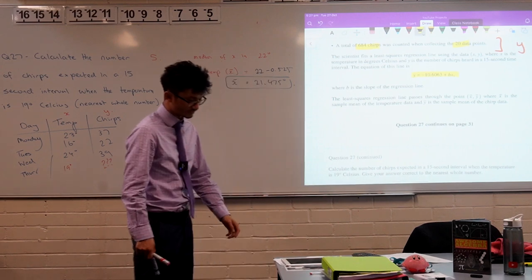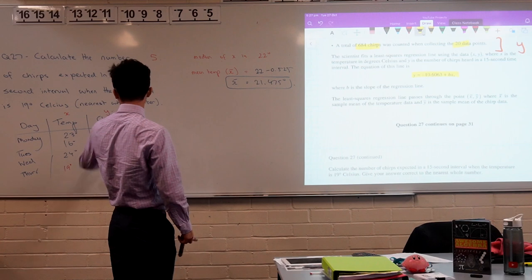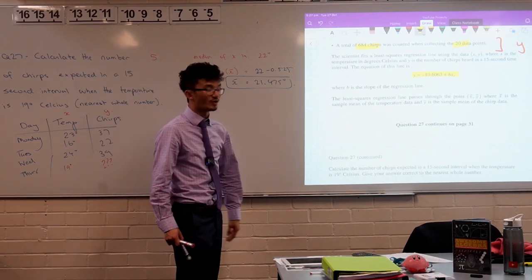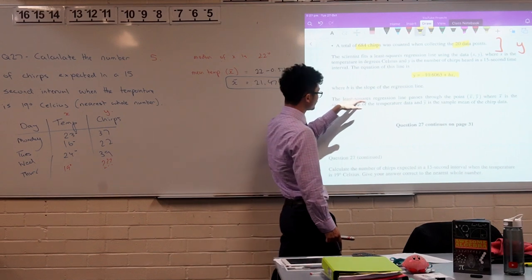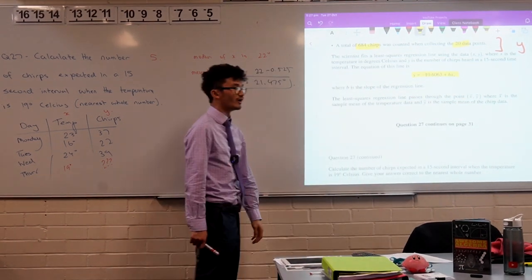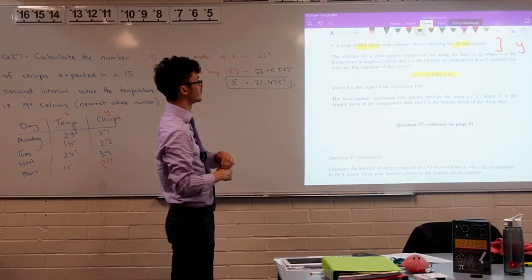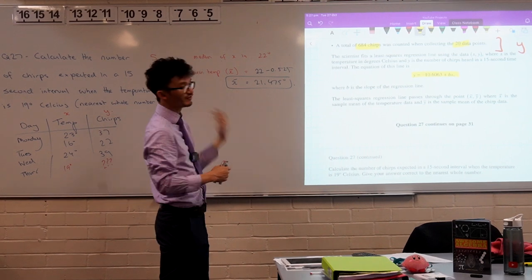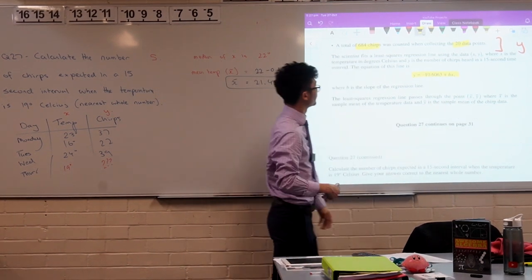A total of 684 chirps was counted when collecting 20 data points. So again, think about what the y is talking about. The y is talking about the chirps. But the other thing to note is that it says the least squares regression line passes through the point x bar and y bar. So actually, if we can find these two points, that's going to be very useful for us. And in fact, we've got one of them already. How can we find the other one, the average or y bar for the chirps?